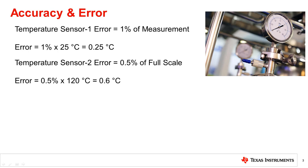In the datasheet for temperature sensors, the sensor is most commonly specced as an absolute value. This makes it simpler to compare temperature sensors when accuracy is critical to the application.